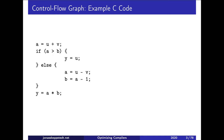When the compiler has read the source code and identified tokens such as identifiers and operators, it will create a syntax tree and check that the syntax rules according to the language grammar are followed.